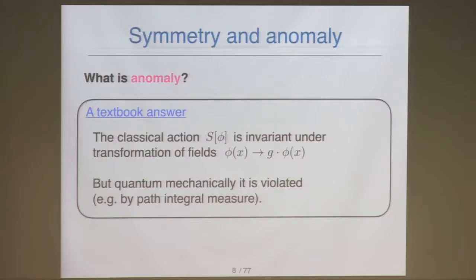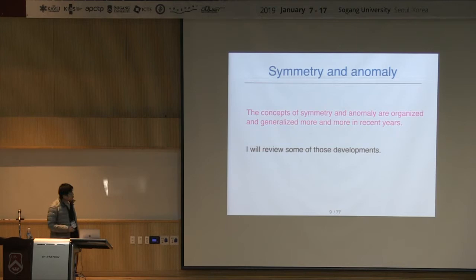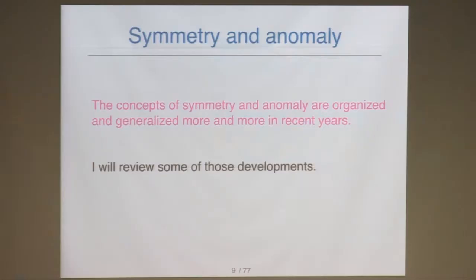And what is anomaly? The textbook answer is: the classical action is invariant under this transformation of the field. But quantum mechanically it is violated — for example, by the path integral measure under some regularization. But what I want to emphasize in my lectures is that the concepts of symmetry and anomaly are organized and generalized more and more in recent years. I'd like to review these developments — that is the purpose of my lectures.